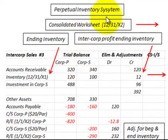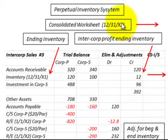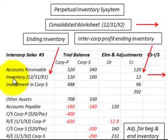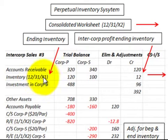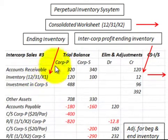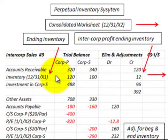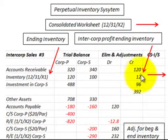First, looking at the perpetual inventory system — our consolidated worksheet is for the 12/31/X2 consolidation date, or the end of the second year. The first difference is in the inventory account. For the perpetual inventory system, we use the end of the first year, 12/31/X1, as our inventory account — that's the ending inventory for the first year, even though our consolidation is based on 12/31/X2. We have an adjustment for the intercompany profit on that ending inventory of 12/31/X1.